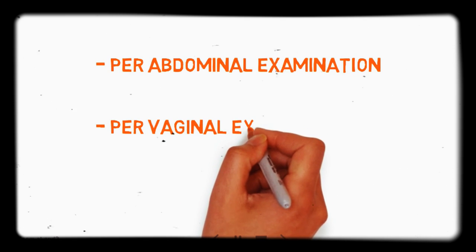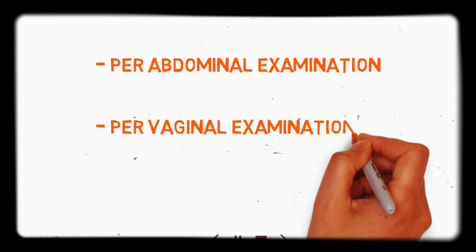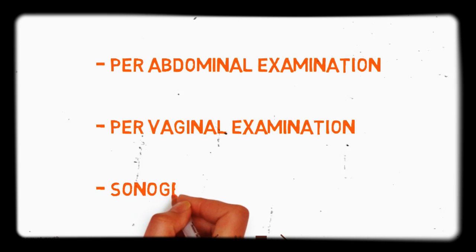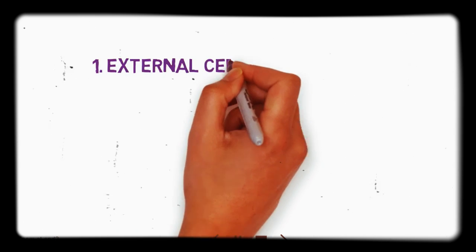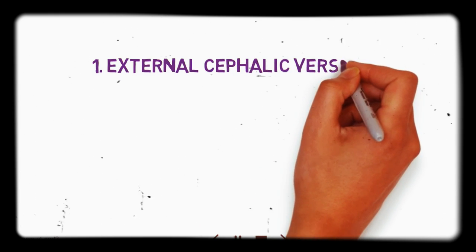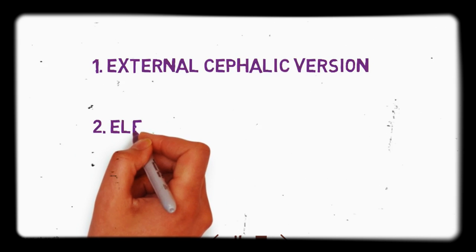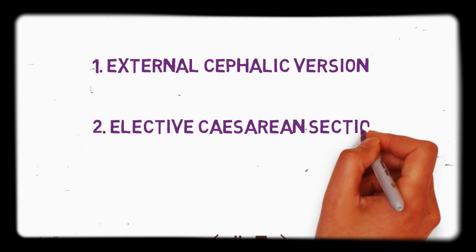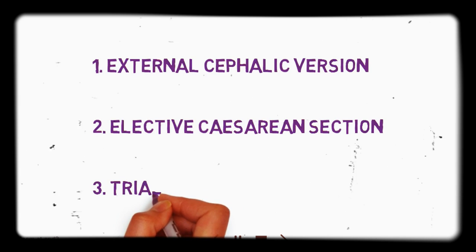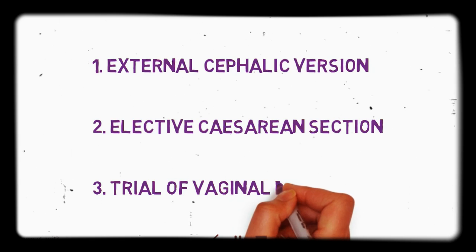Diagnosis mainly includes per abdominal examination, per vaginal examination, or sonography — we can diagnose by external palpation of the abdomen, internal examination through the vagina, or by ultrasound. Next is management. There are three categories: External cephalic version, which uses ultrasound to externally rotate the baby so the head comes to the pelvic brim. Then elective caesarean section, if there is no chance of other management. And finally, trial for vaginal delivery, if there is no complication.